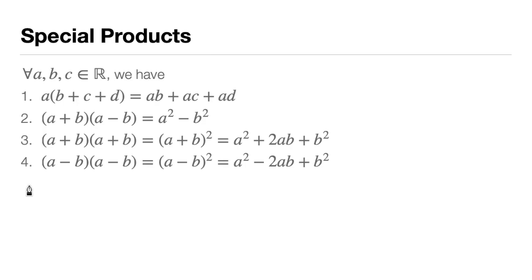I'll give brief examples for each one. For all a, b, c in the real numbers, we have: number one, a times the quantity (b + c + d) equals ab + ac + ad.